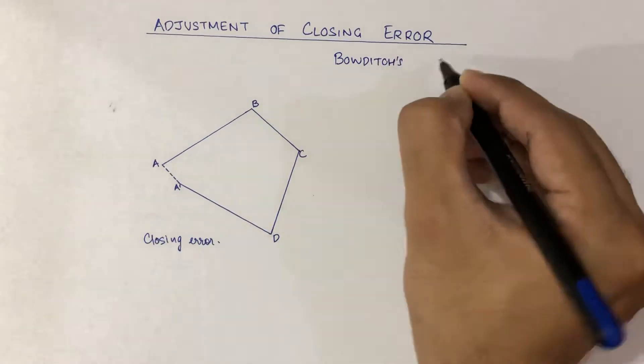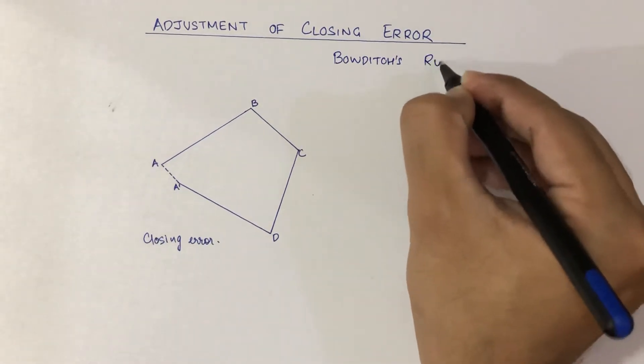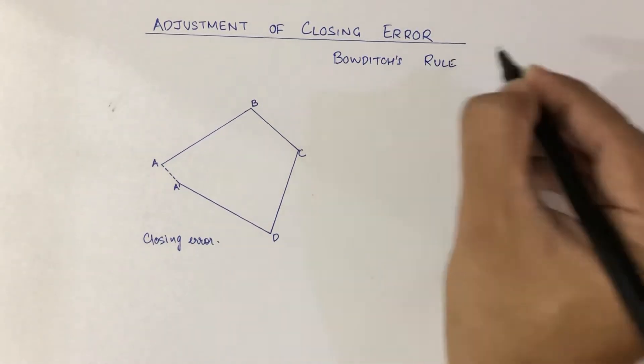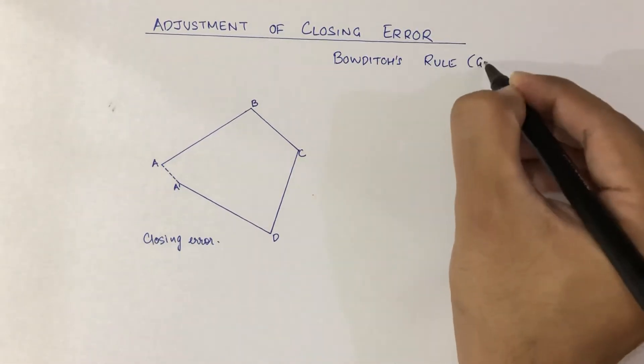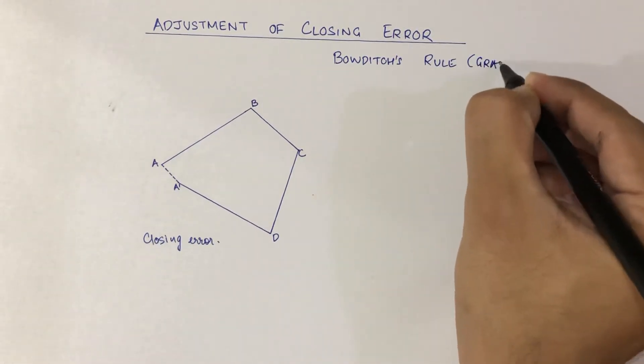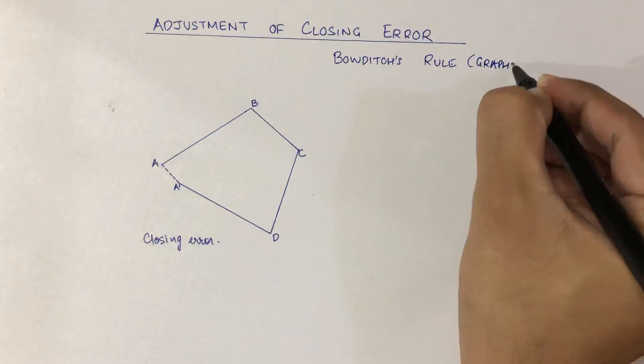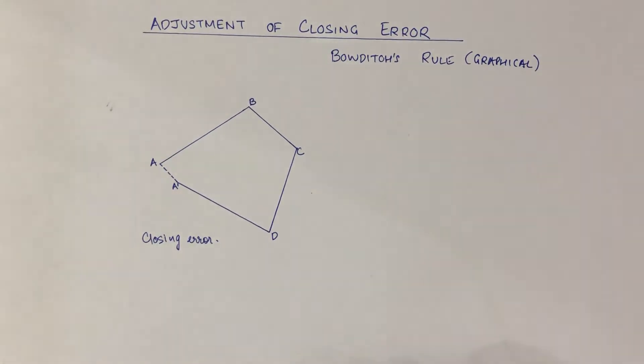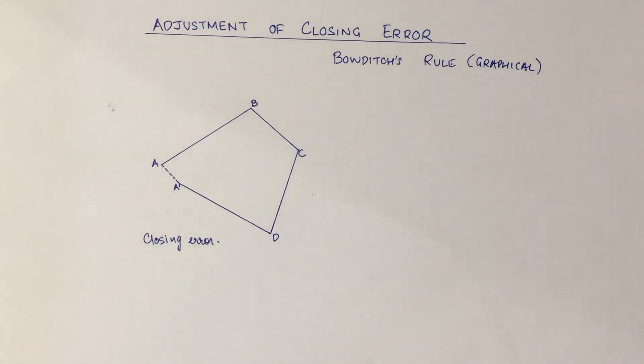This rule is actually a graphical method. Now let's see how to adjust this by the Bowditch rule.